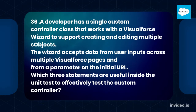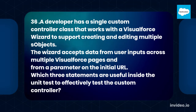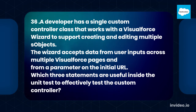Question 36. A developer has a single custom controller class that works with a Visualforce wizard to support creating and editing multiple S objects. The wizard accepts data from user inputs across multiple Visualforce pages and from a parameter on the initial URL. Which three statements are useful inside the unit test to effectively test the custom controller?